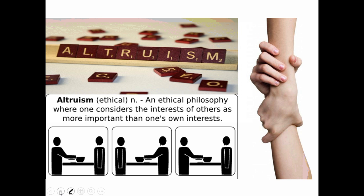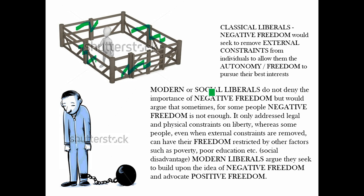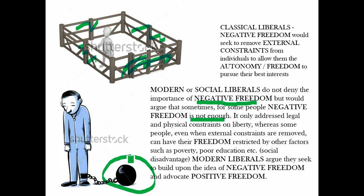Green also argued that while freedom was necessary for an individual to realise their potential and achieve fulfilment, the classical liberal emphasis on negative freedom was only concerned with removing external, legal and physical constraints on an individual's freedom. Green and other modern liberals do not deny the importance of negative freedom, but they argue that sometimes, for some people, negative freedom is simply not enough. It only addresses legal and physical constraints on liberty, whereas for some people, even when these external constraints are removed, their freedom can still be constrained by other factors such as poverty, poor education, and housing — what we broadly term social disadvantage.